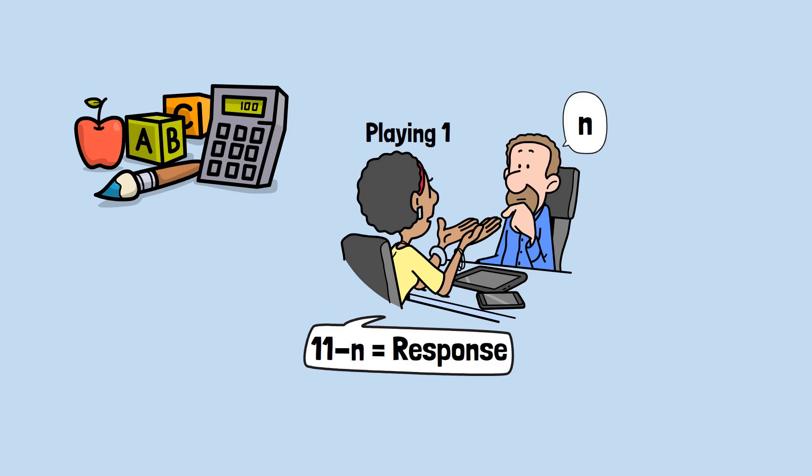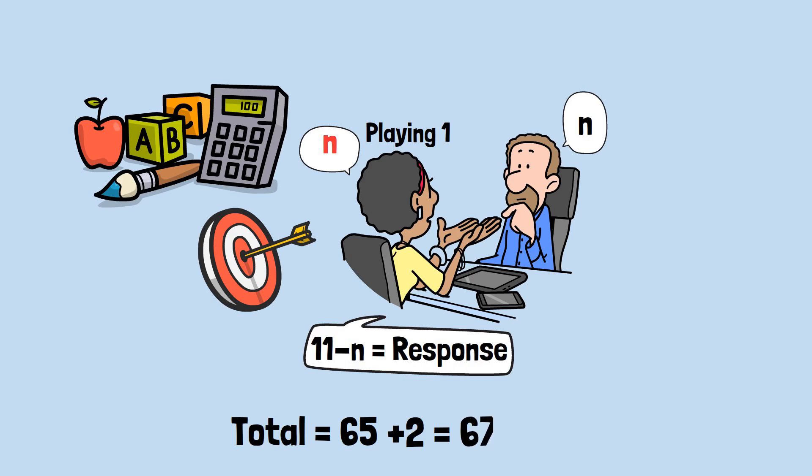Instead of starting with 1, you might begin with seemingly random moves until the total reaches a number that's close to one of your target positions. For example, if through random play the total reaches 65, you could add 2 to bring it to 67, one of your key positions.